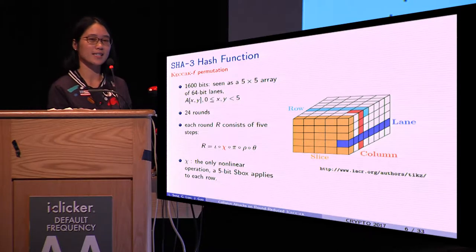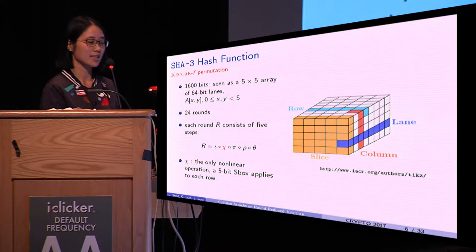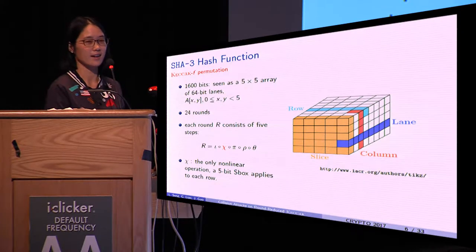Each round consists of five steps: theta, rho, pi, chi, and iota. Chi is the only nonlinear operation.